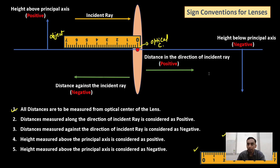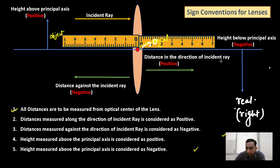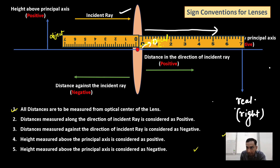Rule Number 3: suppose we have a real image. Real images are always on the right-hand side of the optical center. To measure image distance, I place the 0 of the scale on the optical center and measure the distance to the image. This is measured in the increasing manner — 0, 1, 2, 3, 4 — in the same direction as the incident ray.